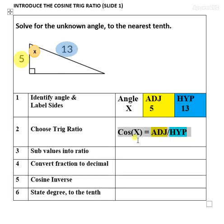The cosine of X equals the adjacent side divided by the hypotenuse. Now we substitute the values into the equation.